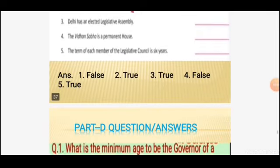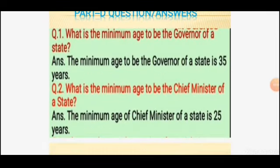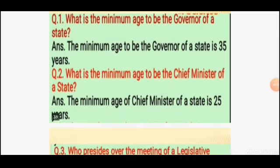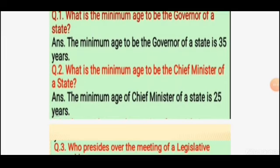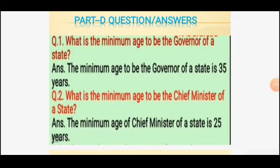Now question answers. First question: what is the minimum age to be the governor of a state? The answer is: the minimum age to be the governor of a state is 35 years. Second question: what is the minimum age to be the chief minister of a state? The answer is: the minimum age of chief minister of a state is 25 years.